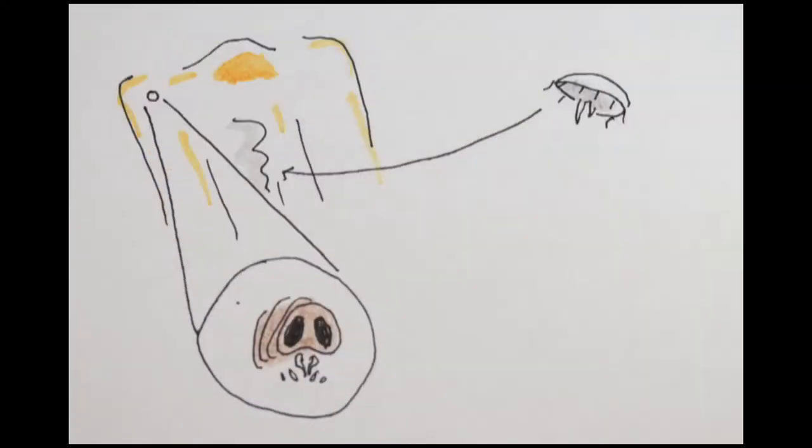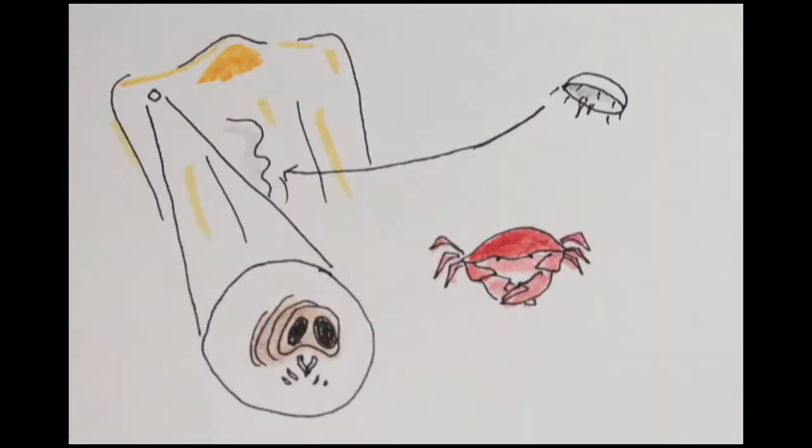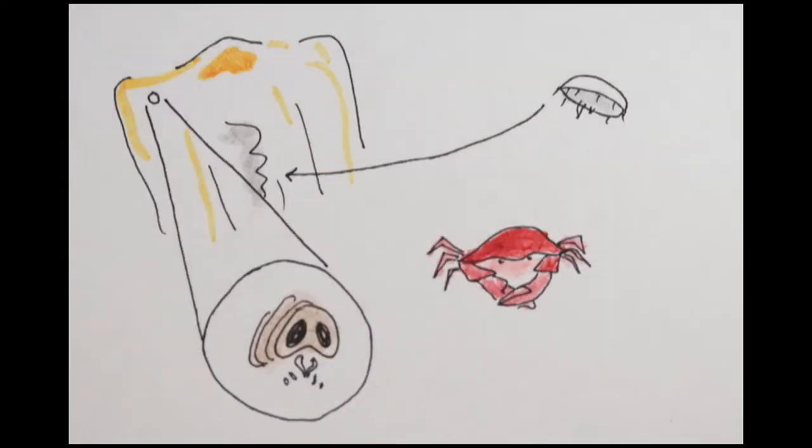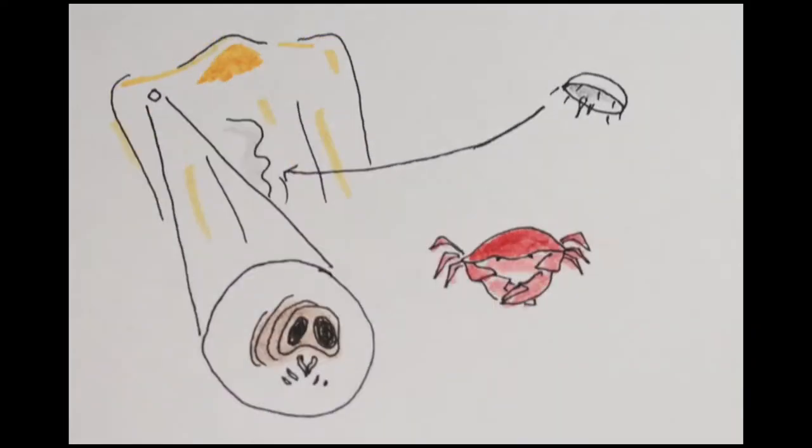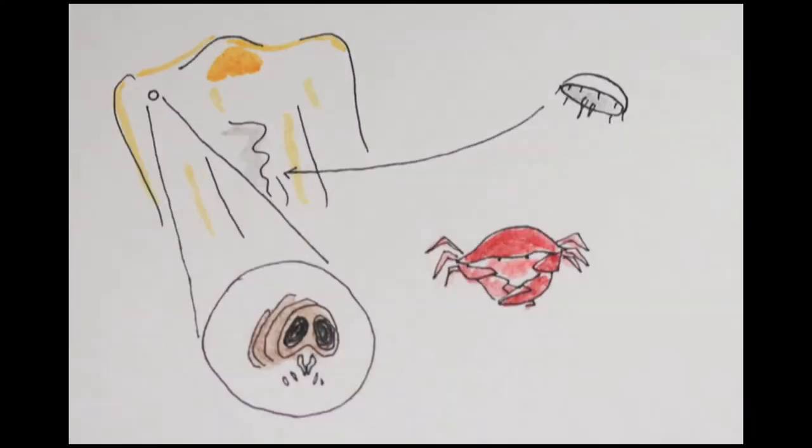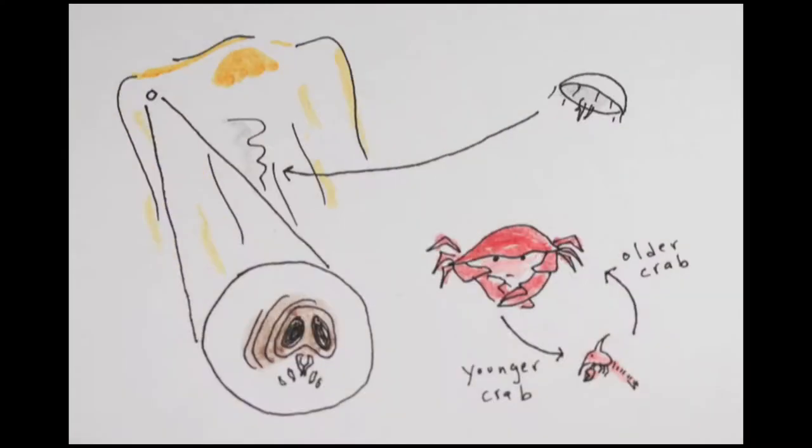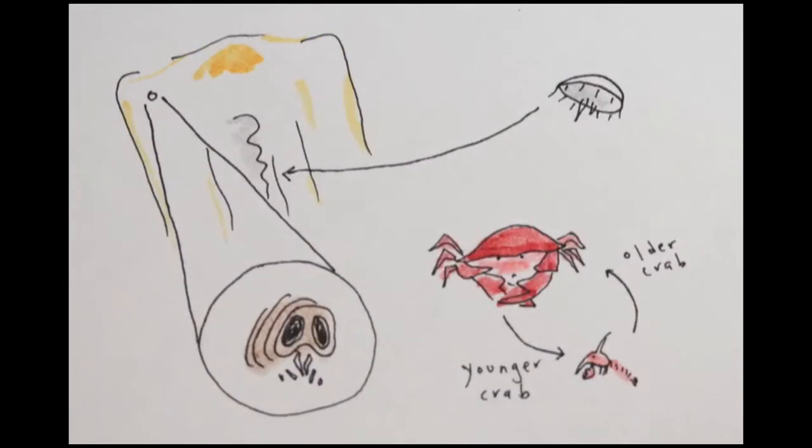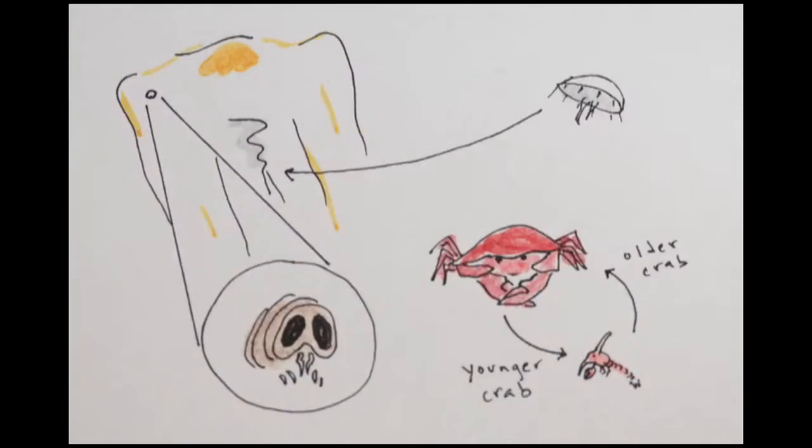The fried egg jellyfish also has another hitchhiker on it, a crab. The crab has an interesting relationship with the jellyfish because at first, it's a pest and can actually do some damage to the jelly. But then as it gets older, its eating habits change, and it actually ends up cleaning the jellyfish and picking off the flesh-eating amphipods.